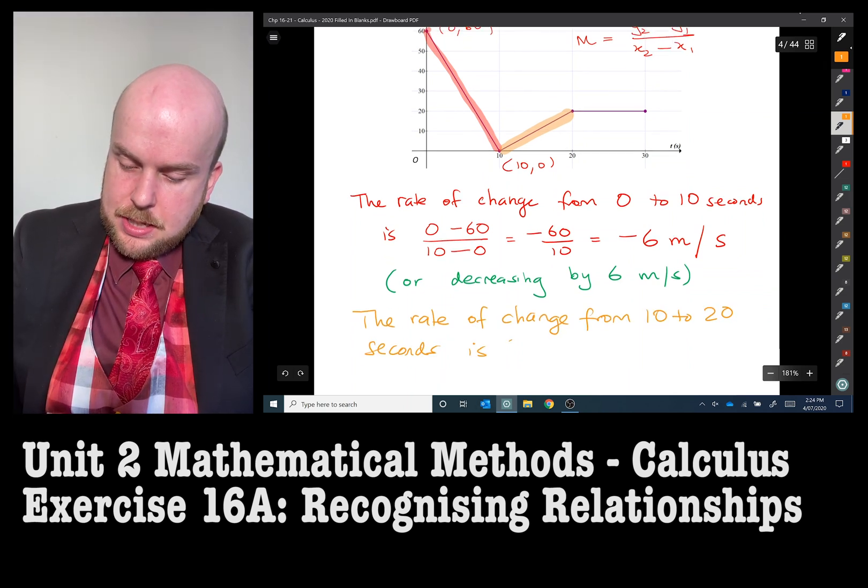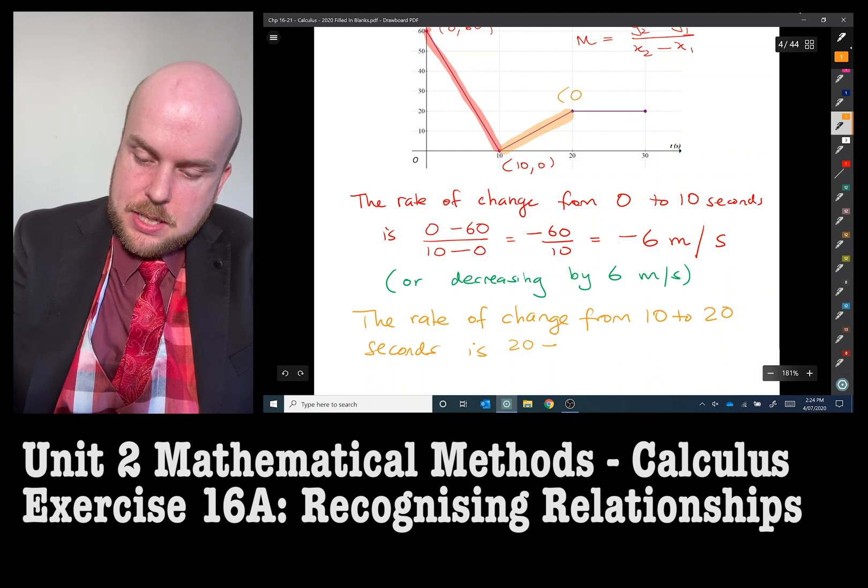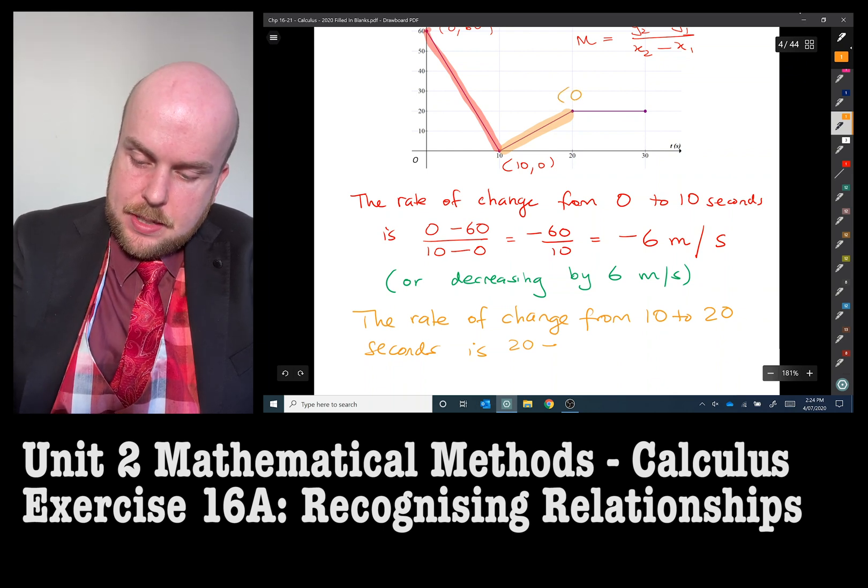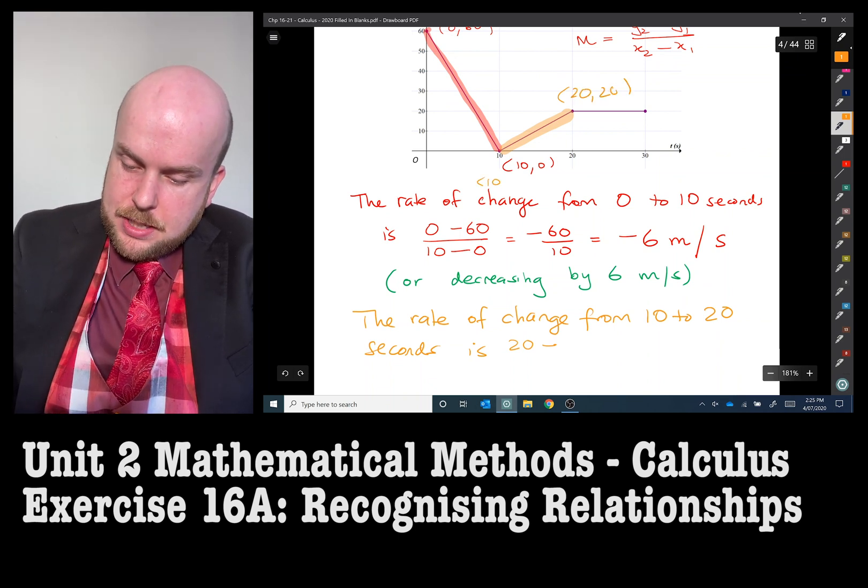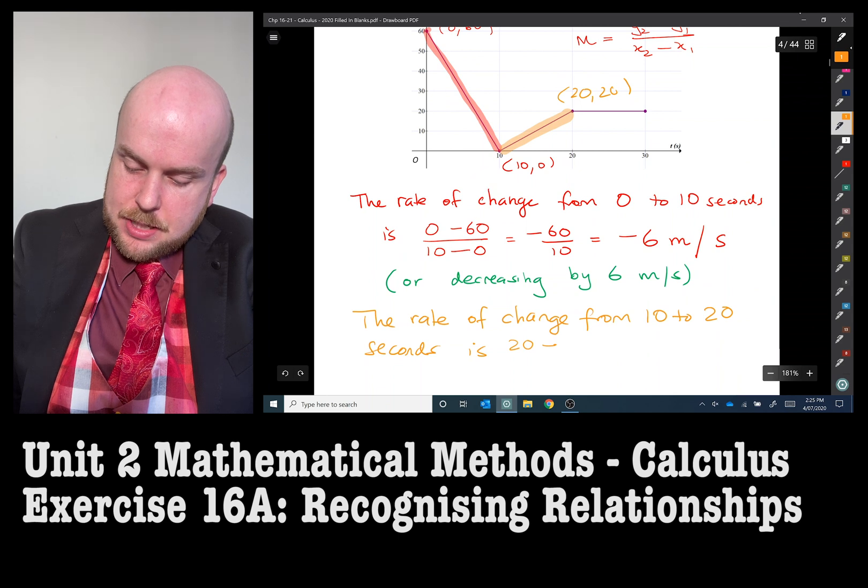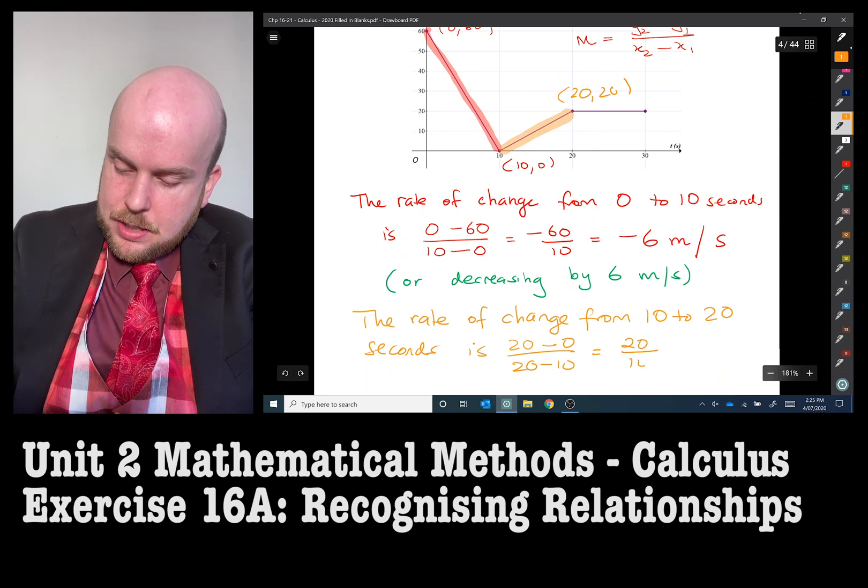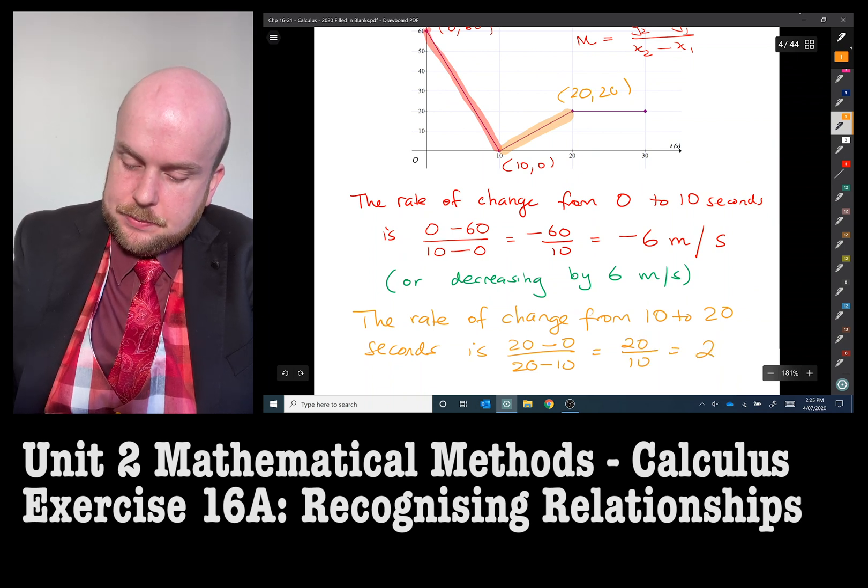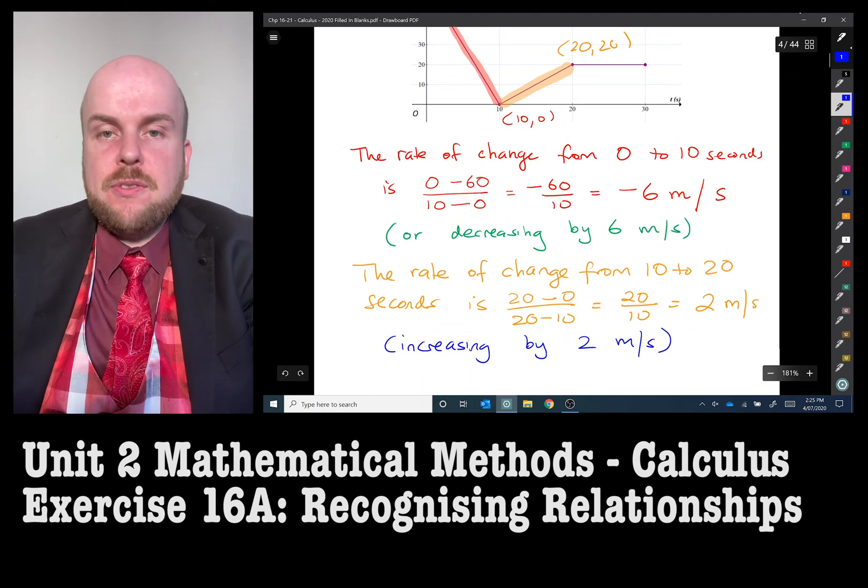And then we've got this positive section here. This is (20,20), and that is (10,0). So 20 take away 0 over 20 take away 10, which is equal to 20 over 10, which is 2 meters per second.